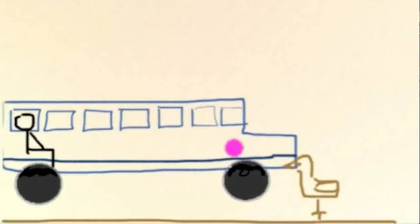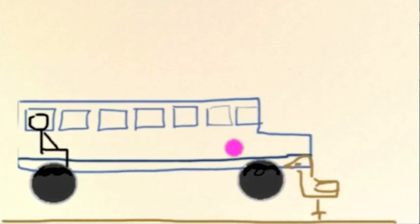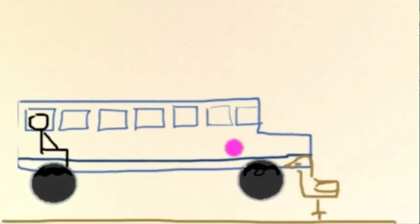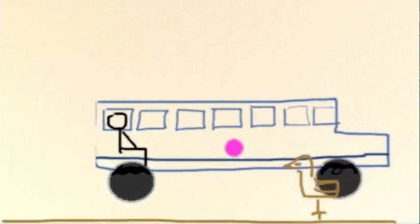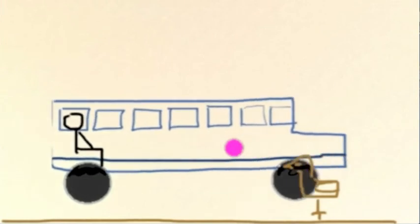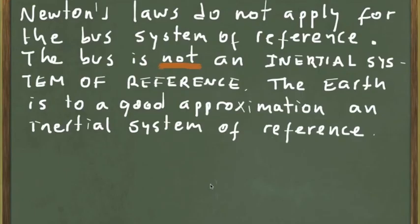So what this tells you is that Newton's laws are only valid in inertial systems of reference. In this animation, the chicken is the only inertial system of reference, because the chicken is standing on the ground, the ground is part of the earth, and the earth can be considered, to a very good approximation, to be an inertial system of reference.